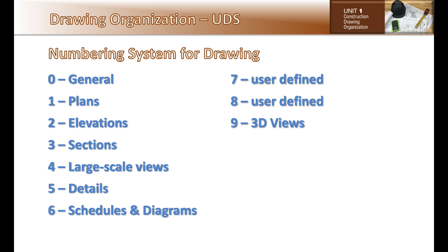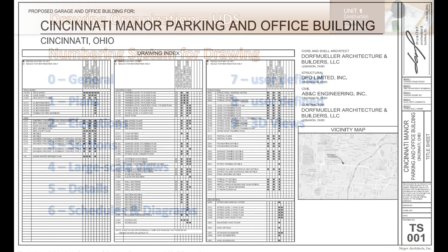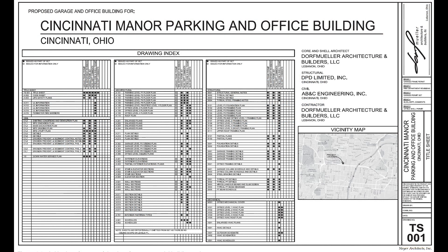The main letter sections are further broken down into numbers identifying types of information within the letter classification: 0 for general, 1 for plans, 2 for elevations, 3 for sections, 5 for details, 6 for schedules and diagrams, all the way to 9 for 3D views. Here is an example of a title page.